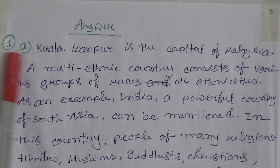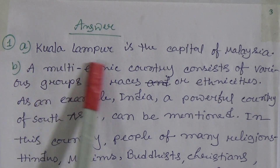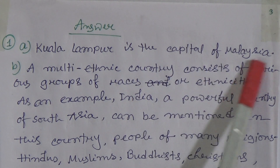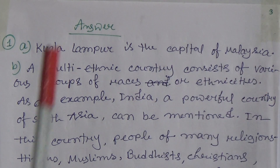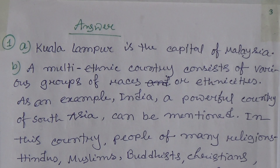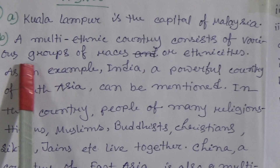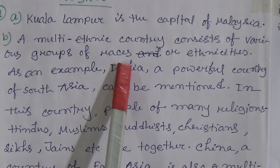Answer to question one-a: Kuala Lumpur is the capital of Malaysia. Question one-b: What do you understand by a multi-ethnic country? A multi-ethnic country consists of various groups of races or ethnic communities.